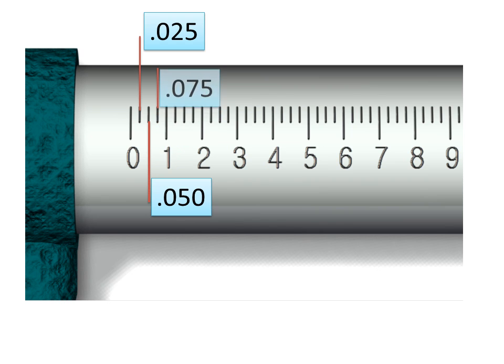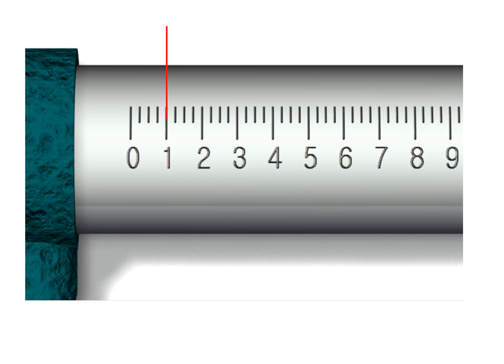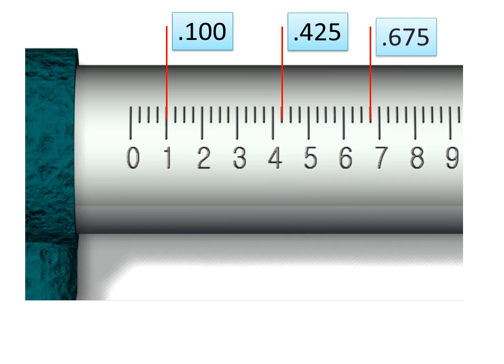Then this mark would obviously be seventy-five, 0.075. On the main scale, if we want to read these together, this 0.1 mark—this would be 0.4 or four hundred twenty-five, 0.425. Down here, can you guess what this would be? This would be 0.675, or six hundred seventy-five thousandths.